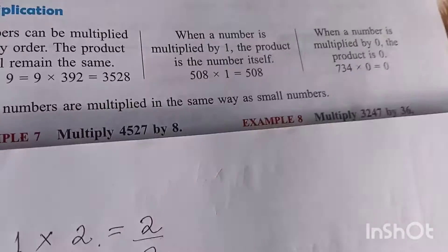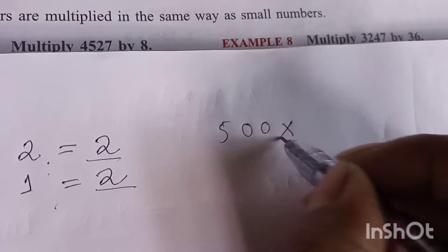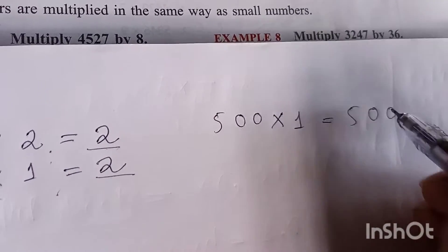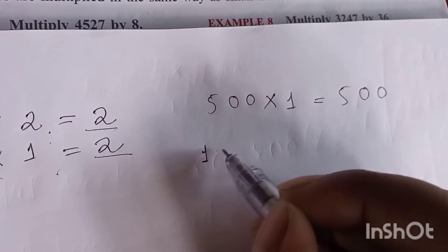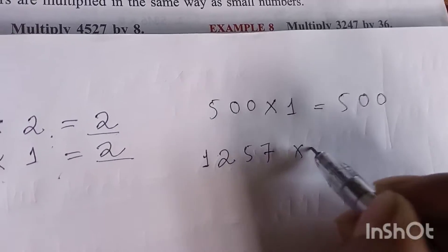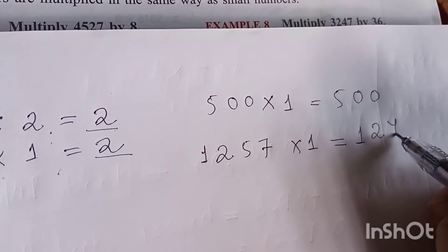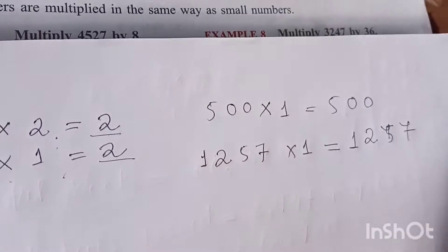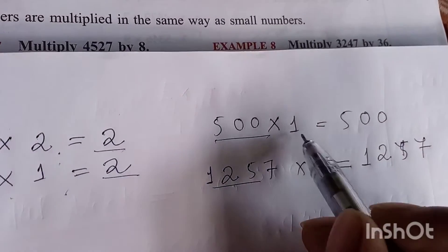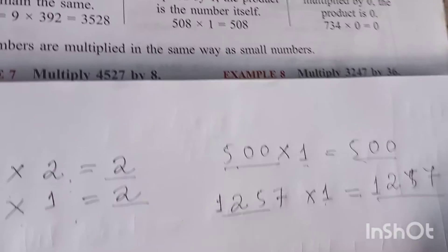Whatever the number may be — for example, five hundred times one is five hundred, and one thousand two hundred fifty-seven times one is equal to one thousand two hundred fifty-seven. Whenever we multiply a number by one, the answer is the number itself.